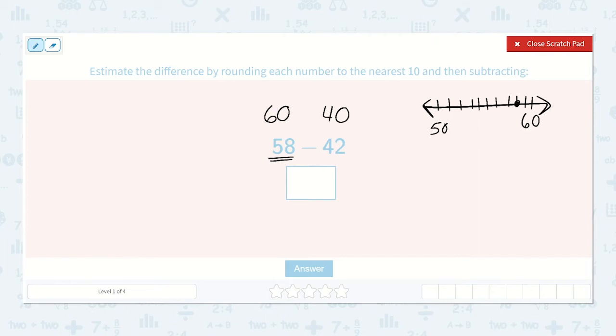So any number that ends with 5 or higher will round up to the next 10. Any number 4 or lower will round back down.